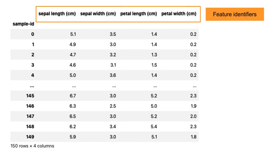The other feature column IDs are along the top: sepal length, sepal width, petal length, and petal width, all in centimeters. Collectively those are the feature identifiers. Taken together that describes the full feature table, where each cell represents the value of a feature for one single sample.